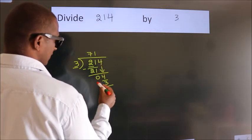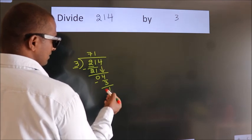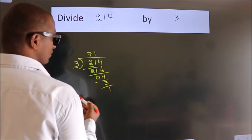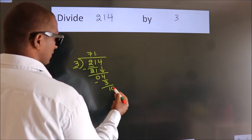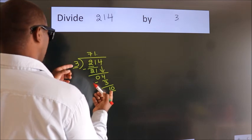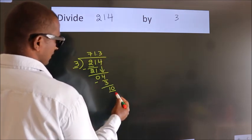Now we subtract. We get 1. After this, no more numbers to bring down. So what we do is put a dot and take 0. So 10. A number close to 10 in the 3 table is 3 times 3 is 9.